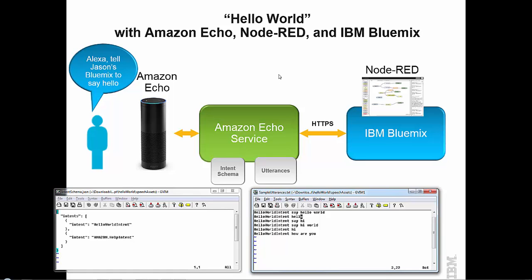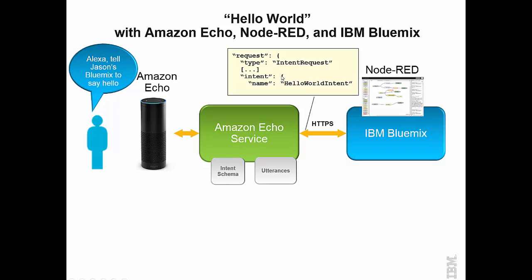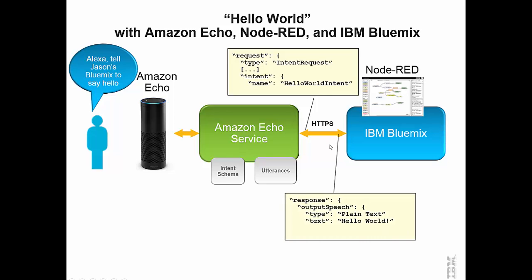Once speech recognition is done, the Amazon Echo service will call our Node-RED service with an HTTPS request. We're going to look for an intent request type, then look for the intent name of hello world intent. That tells our code the person asked us to say hello. We respond with speech output in plain text saying hello world, which goes back to the Echo and it replies hello world. Simple flow like that — so let's go ahead and build it.